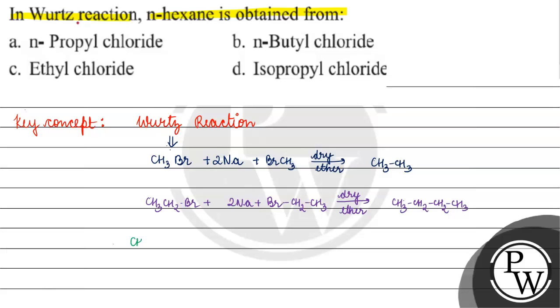Now, if we have hexane, then it will be CH3-CH2-CH2-CH2-CH2-CH3, right? What is this? This is N-hexane. Who made it? This is N-propyl bromide, right? Who made it? N-propyl bromide, right?